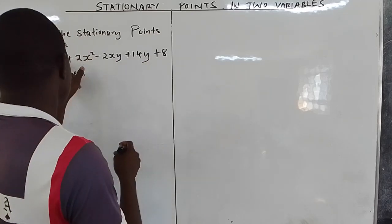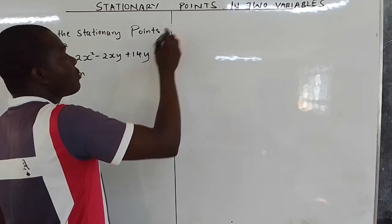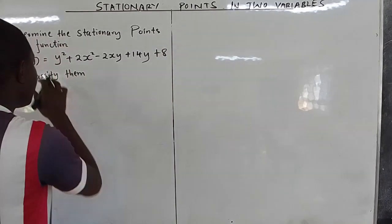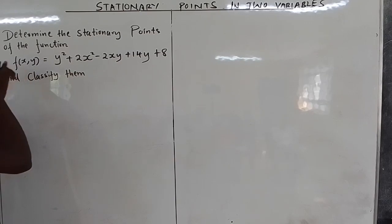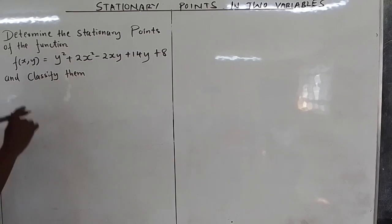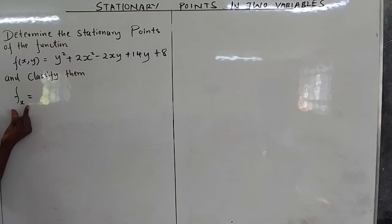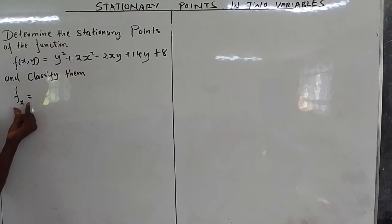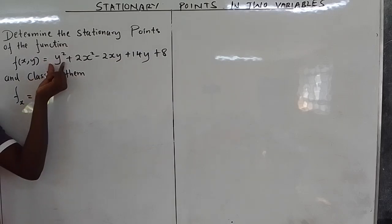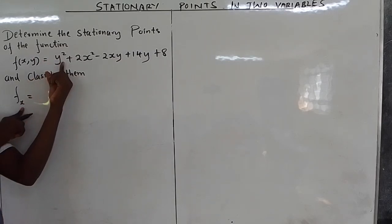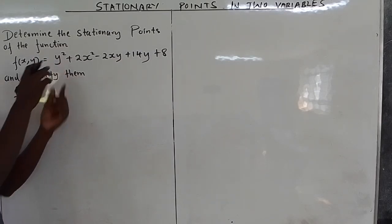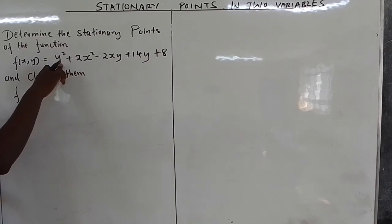So the first partial derivative: we differentiate partially with respect to x. When we differentiate partially with respect to x, only x is a variable and anything else is a constant. So here, y² is a constant — when you differentiate a constant, you get zero.